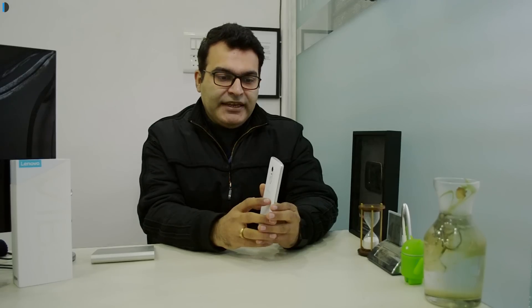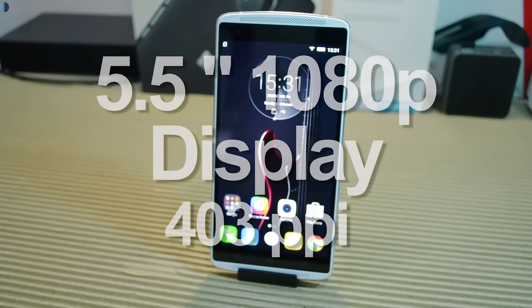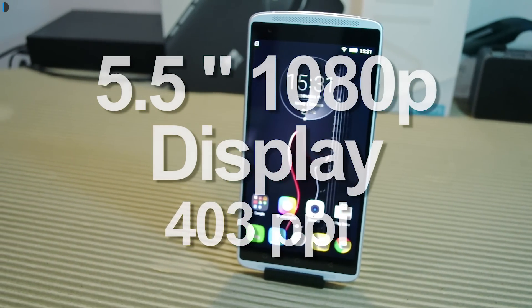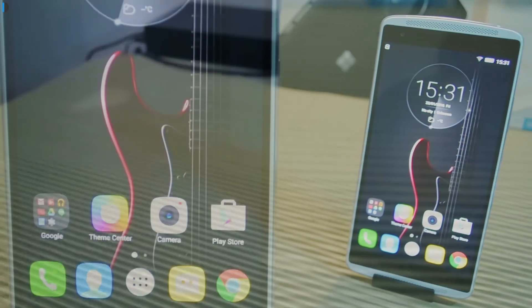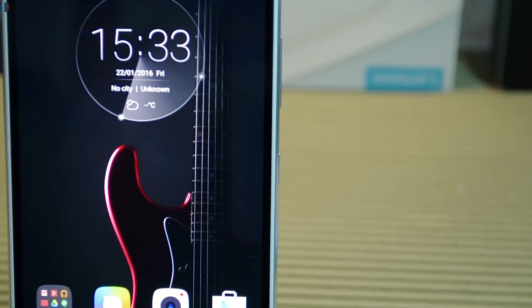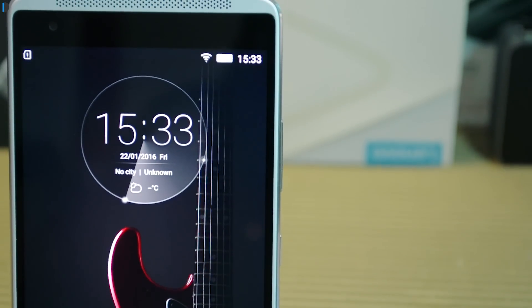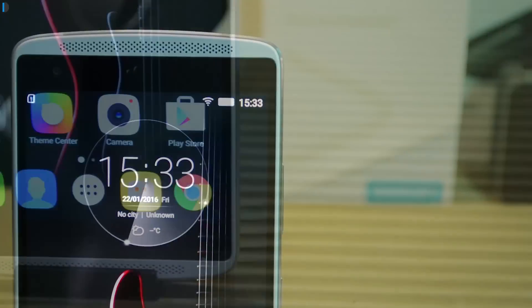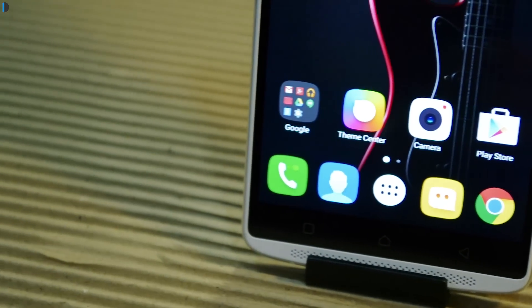Reason number two is the display. The panel on use here is super bright. It's a 5.5 inch full high definition panel with excellent outdoor visibility, great color reproduction. And as told to us by Lenovo, it covers 100% of the NTSC color gamut, which is very rare to find on phone display panels these days. Although it's not a 2K display, but still it's not a deal breaker because the color quality, contrast ratio and the display quality here is top notch.